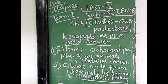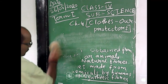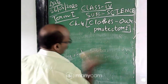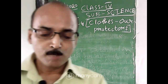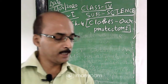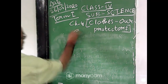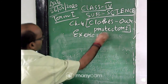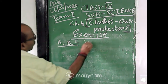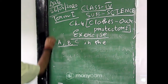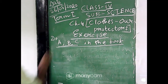Now we will discuss the exercise of the chapter. All of you will do sections A, B, and C in your book with a pencil. I will write here. Do A, B, C in the book — you will do it with pencil only.